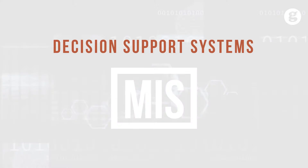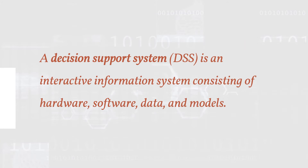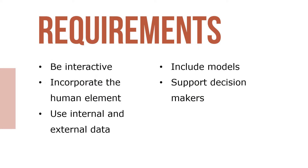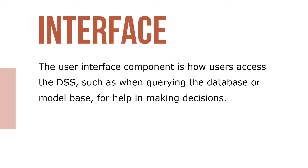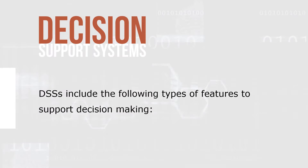A decision support system (DSS) is an interactive information system consisting of hardware, software, data, and models designed to support the decision-making process in organizations. Requirements include being interactive, incorporating the human element, using both internal and external data, including models, and supporting decision makers. The model base component includes mathematical and statistical models that, along with the database, enable the DSS to analyze information. The user interface component is how users access the DSS, such as when querying the database or model base for help in making decisions.